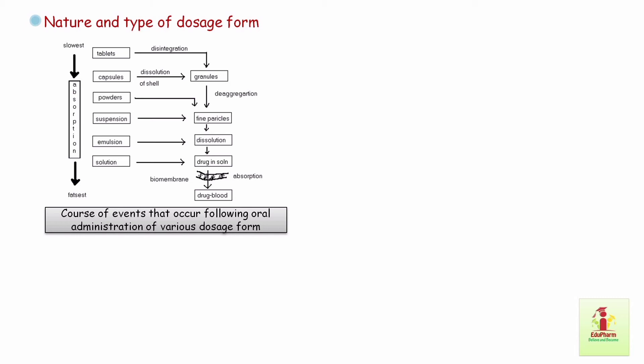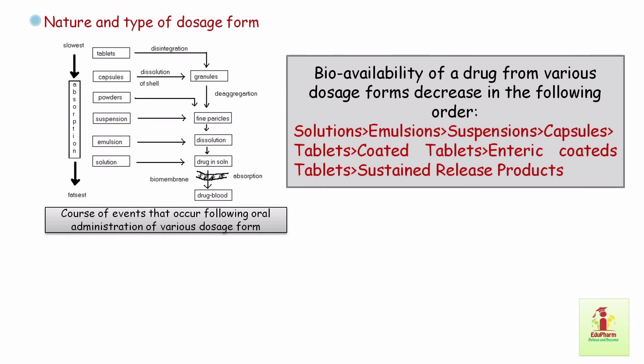A schematic diagram shows the course of events following oral administration of various dosage forms. As a general rule, bioavailability of a drug from a dosage form decreases in the following order: solutions, emulsions, suspensions, capsules, tablets, coated tablets, enteric coated tablets, and then sustained release products. Solutions have higher absorption and sustained release tablets have lower absorption properties.